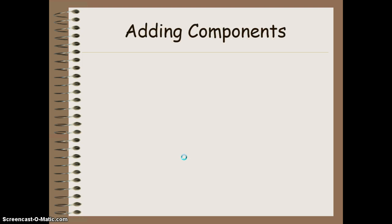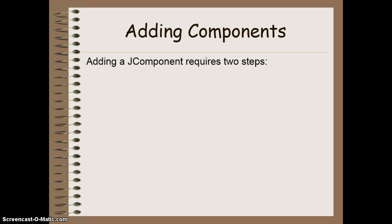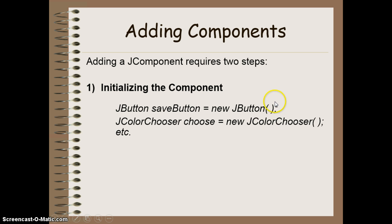Now that we've got our frame created, we need to add some components to it. Components include things like buttons, text boxes, text areas, labels, and so on. These are done by creating JComponent objects, and there are a variety of JComponents available to us. In order to add a JComponent to your JFrame, you have to do two steps. First, initialize the component itself — this is done the same way regardless of the component. There are multiple constructors that can have different parameters, but most have a default constructor requiring no parameters.